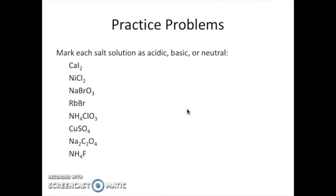We have several examples here — some different from the ones in class, some the same. The first one is calcium iodide. We ask: what are the parent acid and parent base? Acids make anions, and I⁻ is the anion, so it came from HI, which is a strong acid. Ca²⁺ comes from calcium hydroxide, which is also a strong base. With a strong acid and a strong base, they cancel each other out and the salt will be neutral when dissolved in solution.